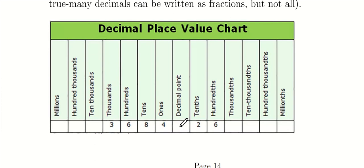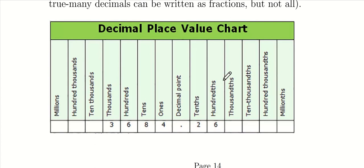If we have a number that's a fraction or doesn't have an exact whole part, we can write it as a decimal. The decimal point comes immediately after the ones position, and then from there the positions are the tenths, hundredths, thousandths, ten-thousandths, hundred-thousandths, and millionths. That same pattern persists, but be aware that there is no equivalent ones unit — whereas whole numbers go ones, tens, hundreds, the decimals start out at tenths and then hundredths.